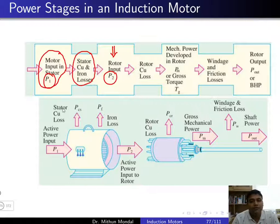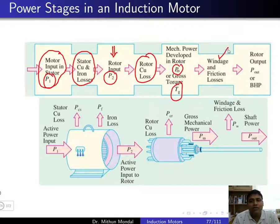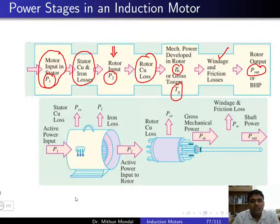Subtracting the rotor copper loss from the rotor input P2, we get the mechanical power developed in the rotor, given by Pm. The gross torque developed is known as Tg. Once we subtract the windage and friction losses, the net output power at the shaft is given by P_output.